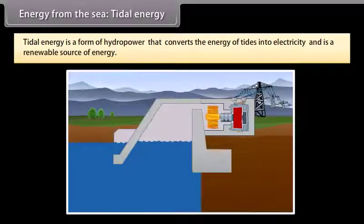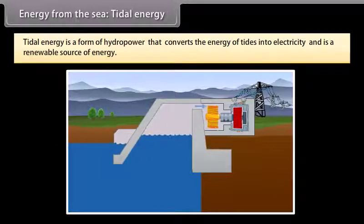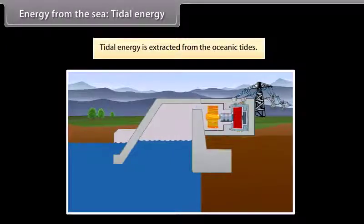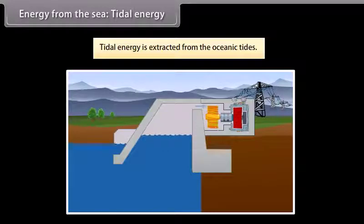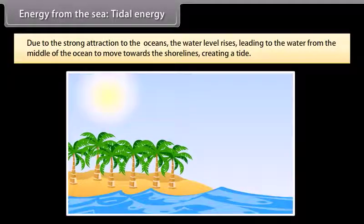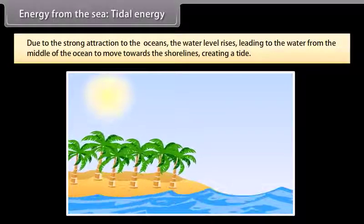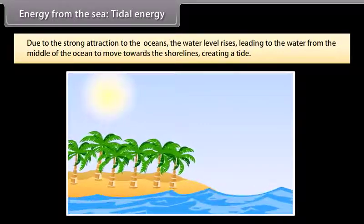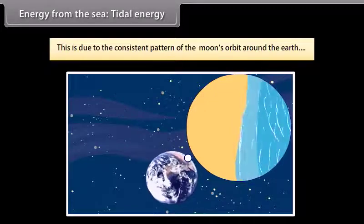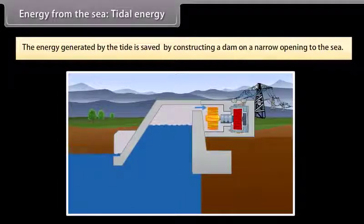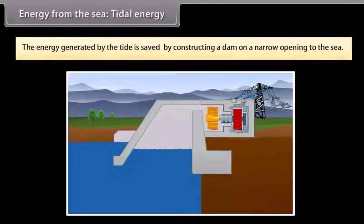Energy from the sea: Tidal energy. Tidal energy is a form of hydropower that converts the energy of tides into electricity. This is a renewable source of energy. Tidal energy is extracted from the oceanic tides. Tidal forces are periodic variations in gravitational attraction exerted by the moon. This force creates motions or currents in the oceans. Due to the strong attraction to the oceans, the water level rises. This leads to the water from the middle of the ocean to move towards the shorelines, creating a tide. This is an unfailing occurrence due to the consistent pattern of the moon's orbit around the earth. The energy generated by the tide is saved by constructing a dam on a narrow opening to the sea. A turbine is then fixed at the opening of the dam that converts this tidal energy to electricity.